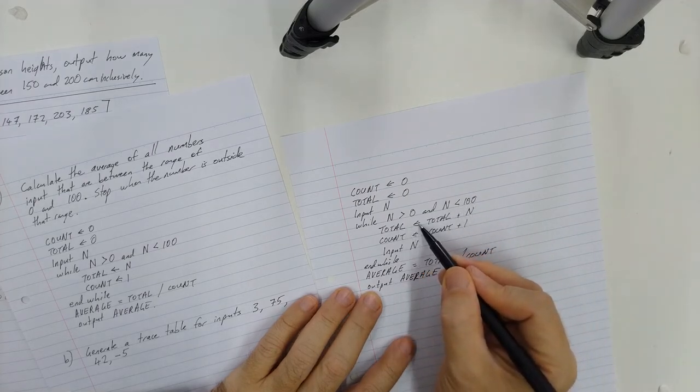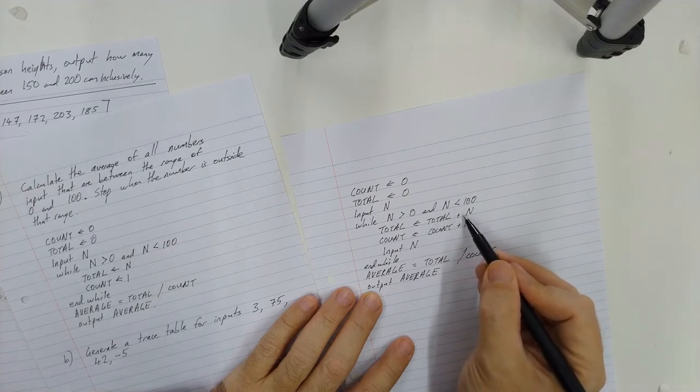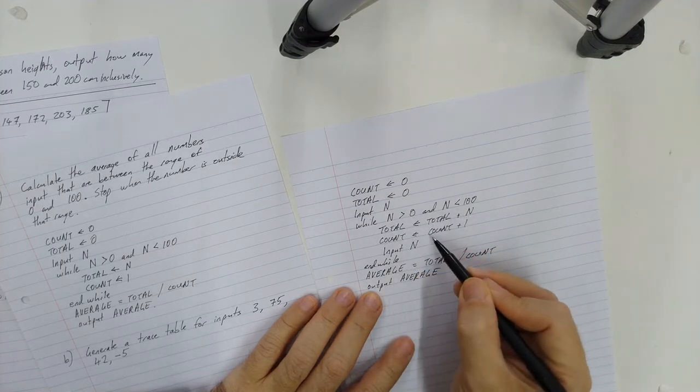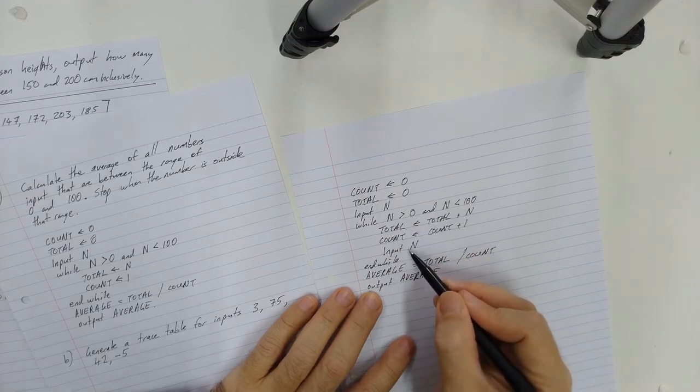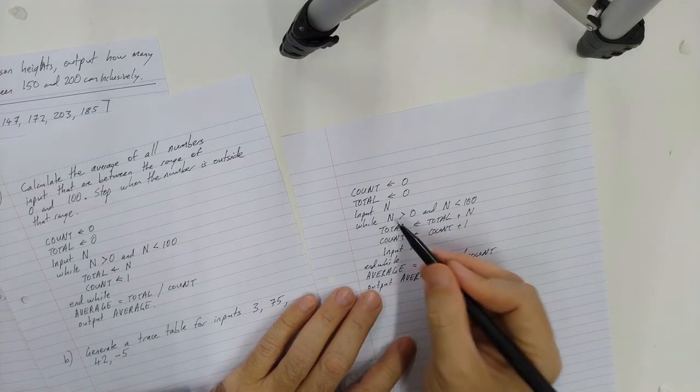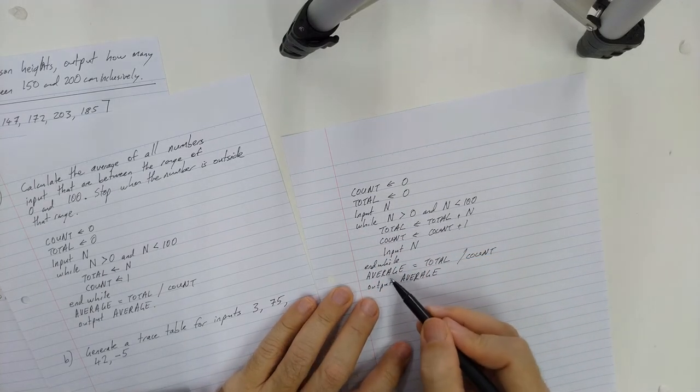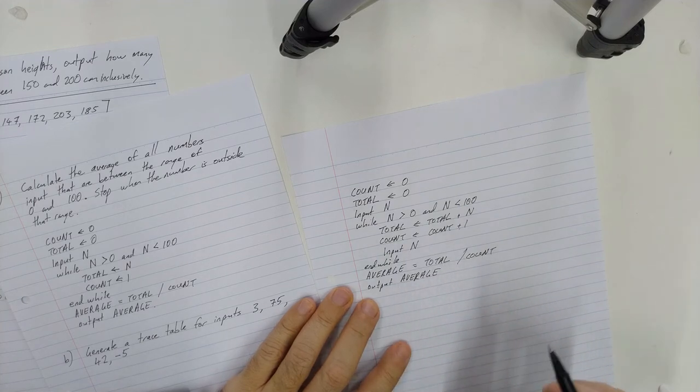Total is being set to total plus n. So look up whatever is in total, add n to it, store the answer into total. Look up count, add 1 to it, store the answer in count, input a new n. And then here's the end of my loop. So I keep looping while those things are true. And then average is equal to total divided by count, output the average.